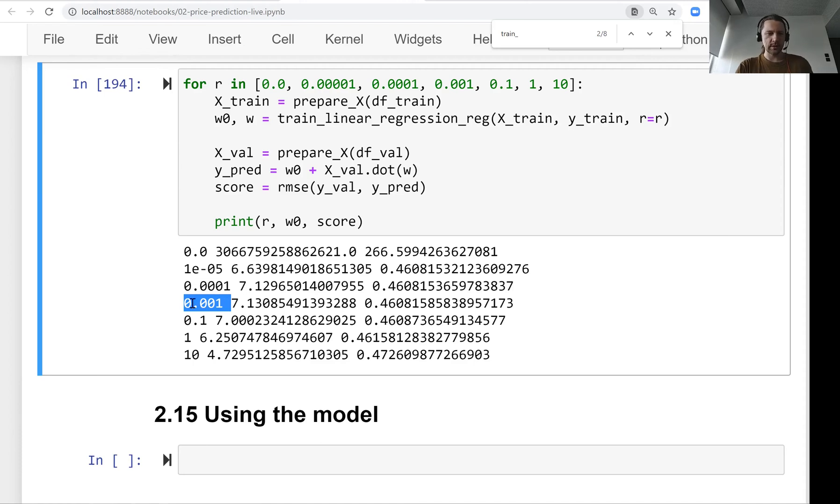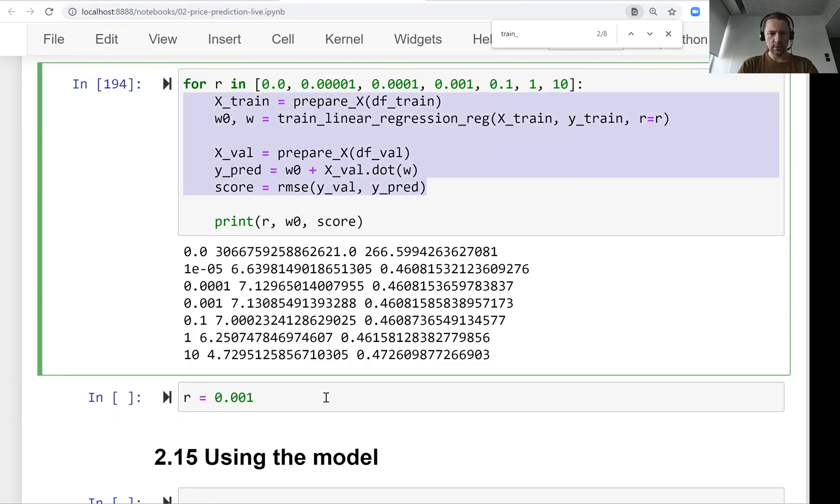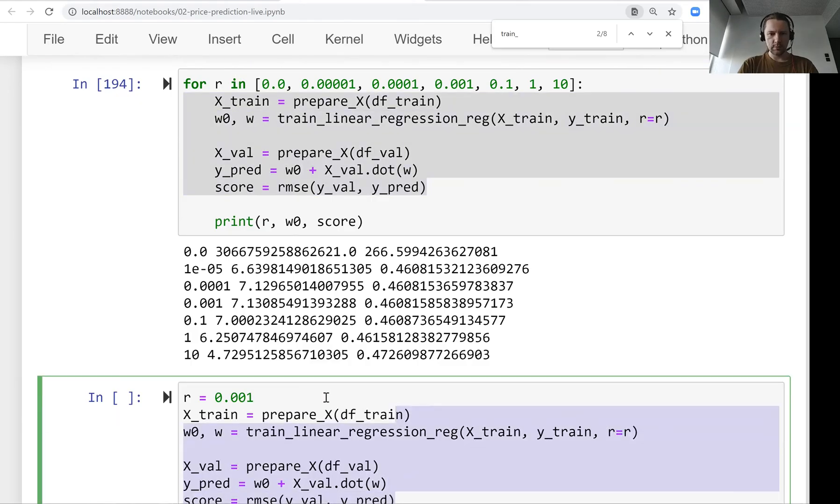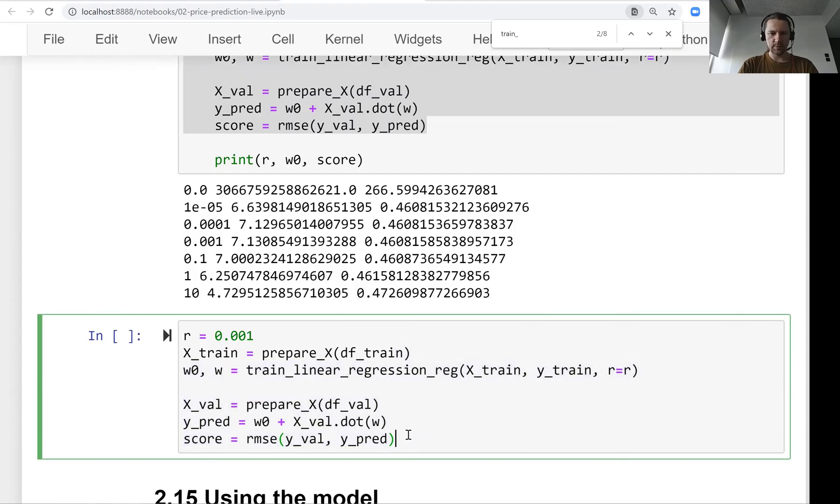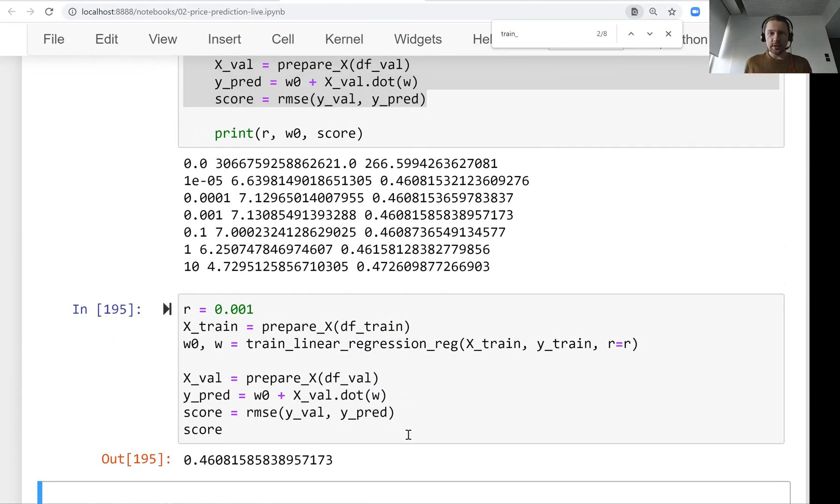Let's train our model once again. We will just print the score. So we just selected the best regularization parameter and we trained our model with this regularization parameter.